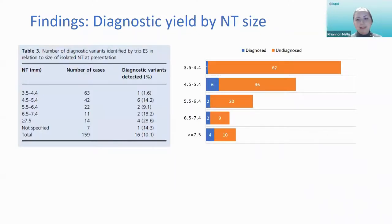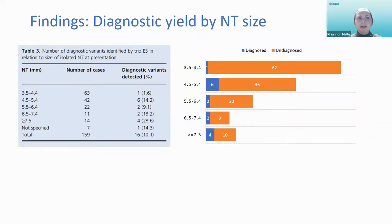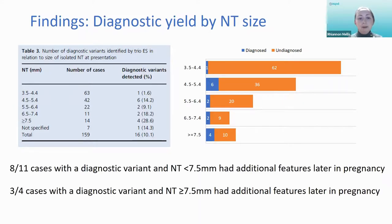Looking at the size of NT in all cases that presented with isolated increased NT and how it correlated with diagnostic yield: the majority of cases had measurements towards the lower end of the range. As expected, larger measurements at presentation were most likely to have a diagnostic variant. For those with NT greater than 7.5mm, 28% had a diagnostic variant on exome sequencing. At the other end, there was only one diagnostic variant found out of 63 cases where the NT was less than 4.5mm. However, it's worth bearing in mind that most cases with a diagnostic variant were those that developed additional features later in pregnancy regardless of measurement — so the presence of additional structural abnormalities may still be the stronger predictor of diagnostic yield.